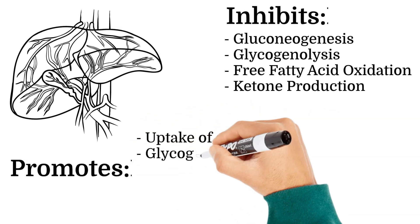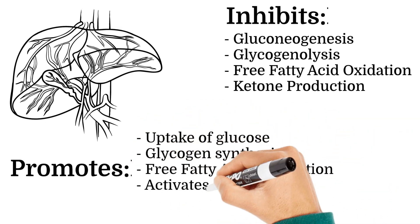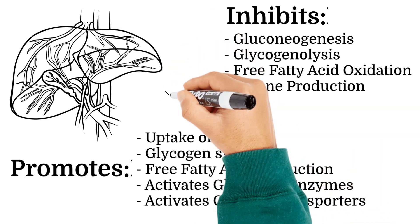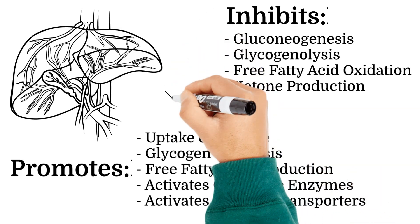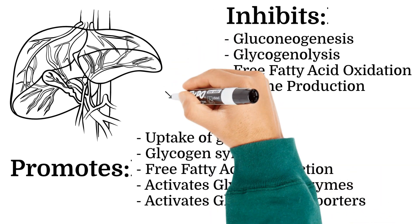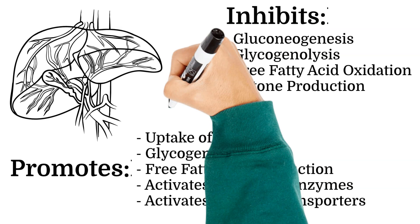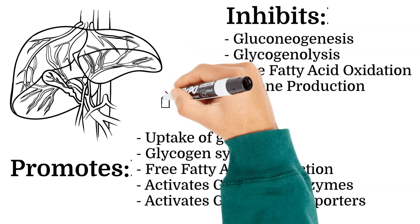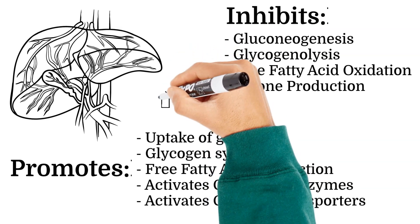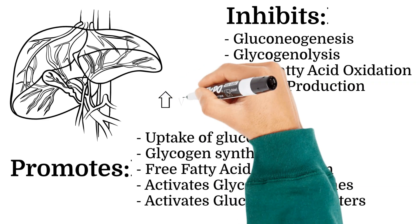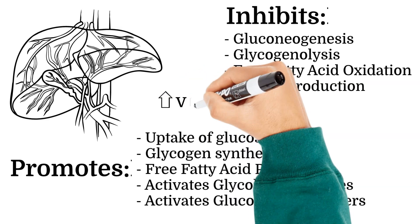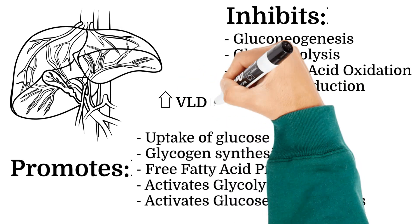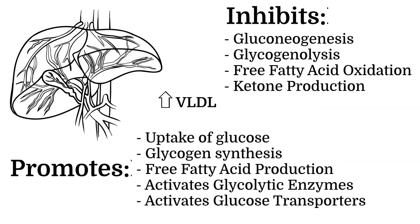Additionally, when the liver is saturated with glycogen, insulin promotes the conversion of excess glucose into fatty acids that are then exported from the liver as lipoproteins. This increases very low-density lipoprotein (VLDL) in the blood, which results in the formation and accumulation of triglycerides in adipose tissues.